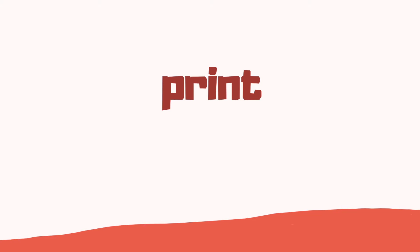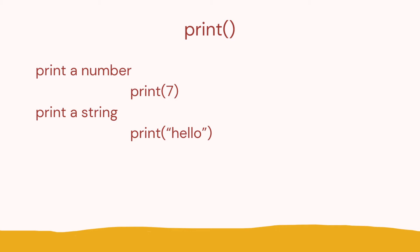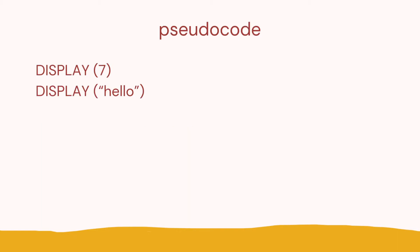We start off looking at print. When we want to see something on the screen — in this case the number seven — we use print with brackets. What we put in the brackets will print to the screen. Here we're printing a number, and here we're printing a string. The difference with a string is we have quotes — either single or double — around what we want to print. For example, here's 'Dr. Cody' with single quotes — single or double quotes work the same way.